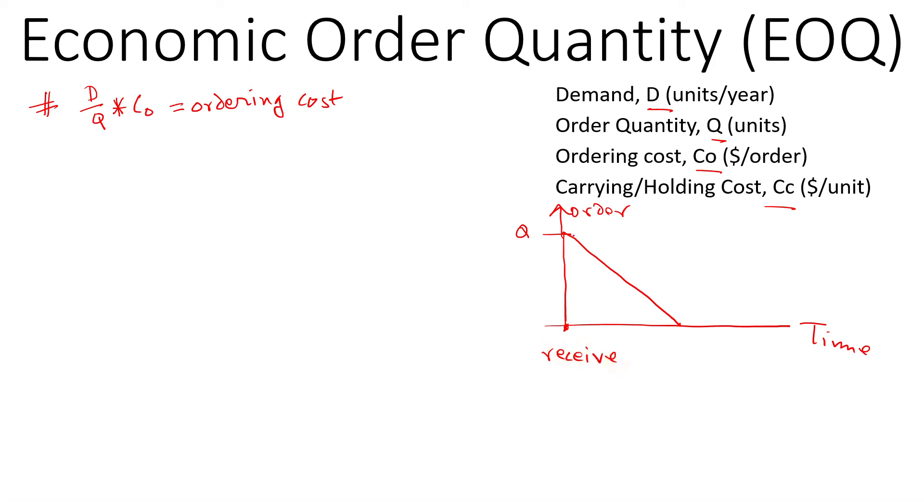It will be used, used, used, and then it will completely stop, and then again we receive another order here of Q amount and going like this. So as you can see here, it starts from zero to Q.